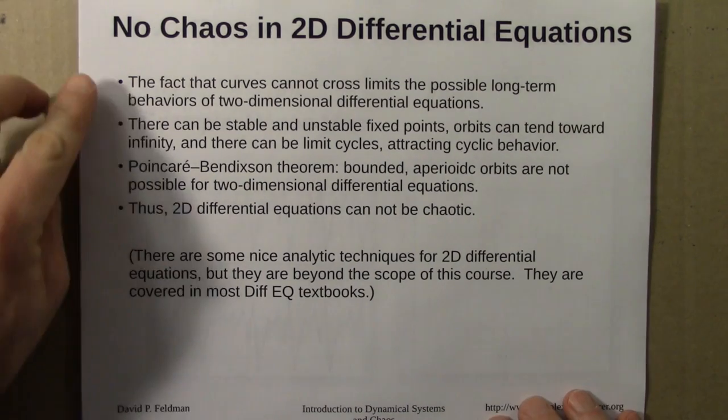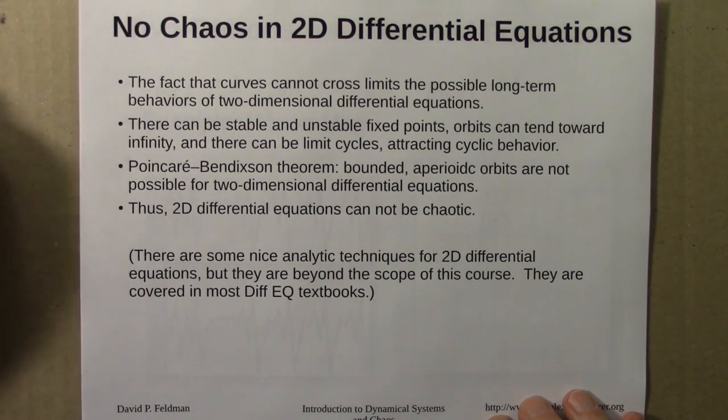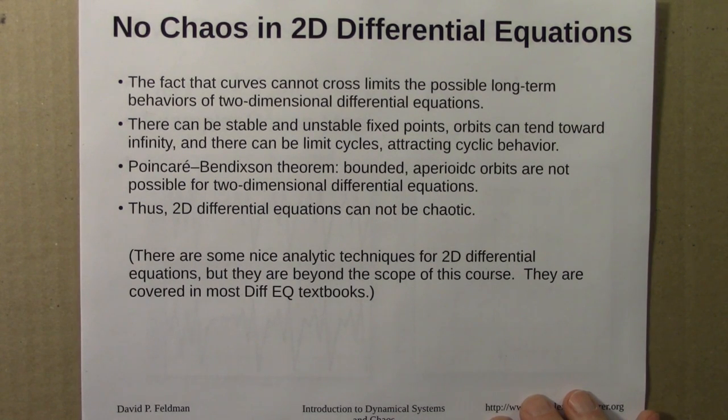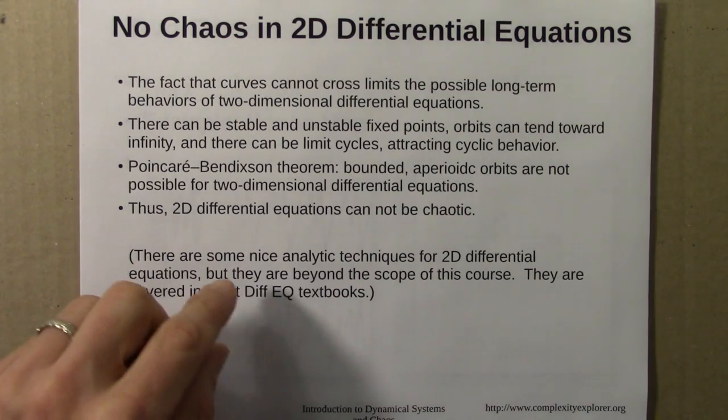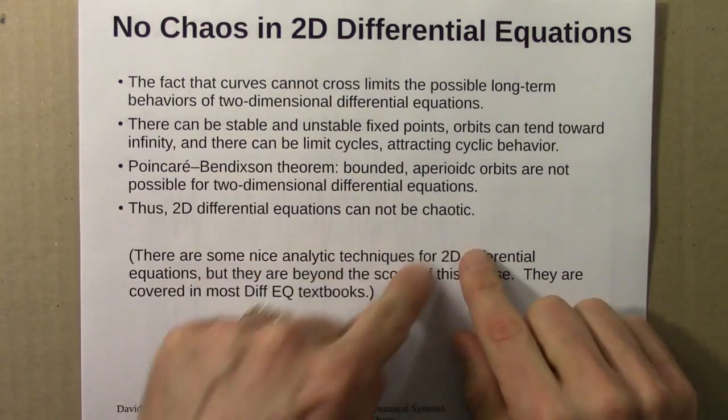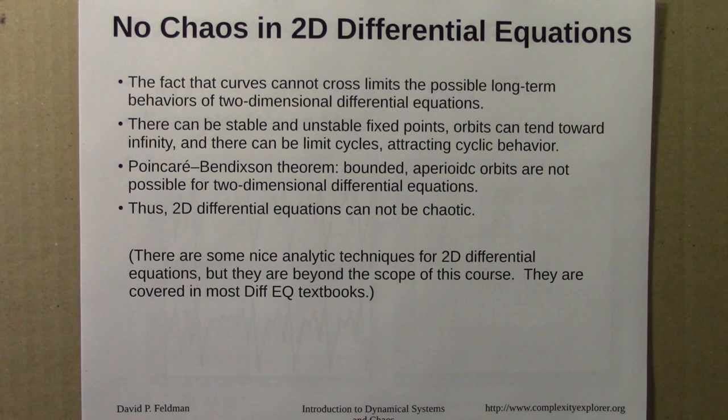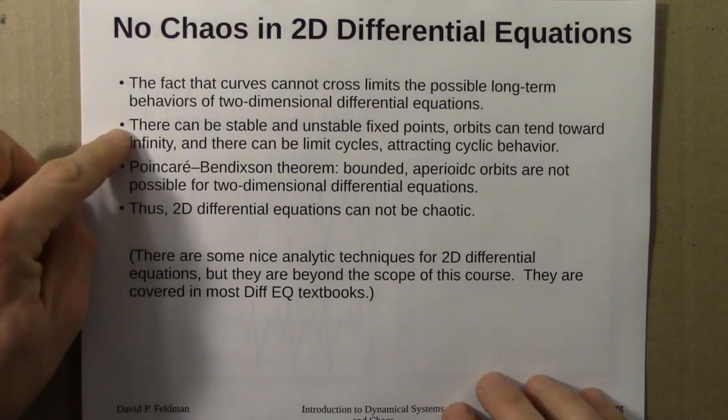The fact that curves cannot cross limits the possible long-term behavior of 2D differential equations. So what can those behaviors be? There can be stable and unstable fixed points. You could spiral in addition to getting pulled in, so you have a fixed point and you spiral towards it. But still, fixed points, stable and unstable. Orbits could tend to infinity. There can be limit cycles, like in the van der Pol oscillator, which is a type of attracting cyclic or periodic behavior. And that's pretty much it.